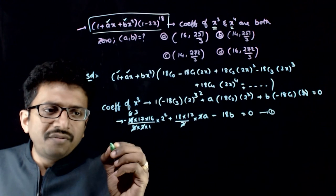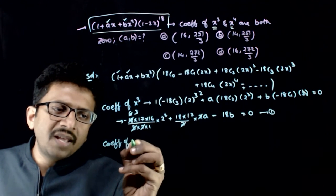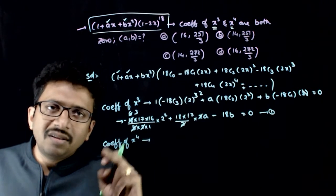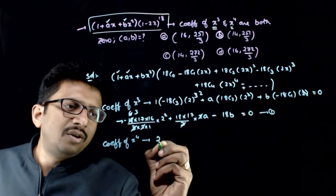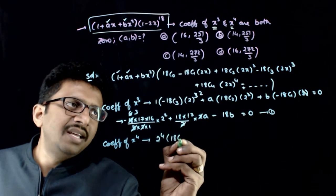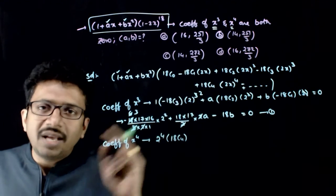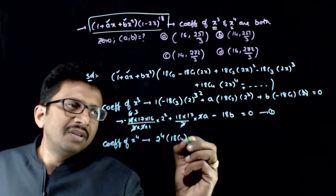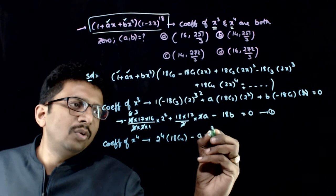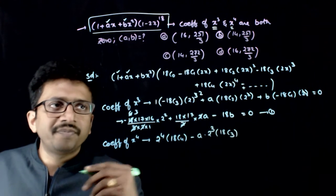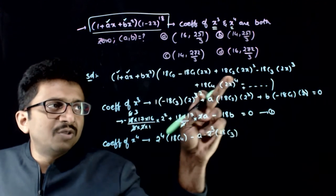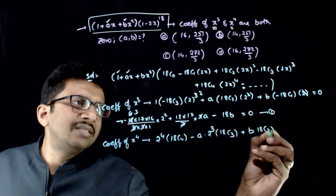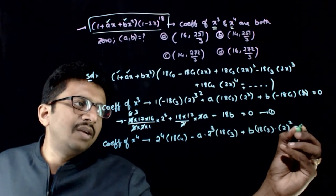Similarly, for the coefficient of x⁴: 1 multiplied by the x⁴ term gives 2⁴·18C4; the ax term multiplied by the x³ term gives minus a·8·18C3; and the bx² term multiplied by the x² term gives b·18C2·2² = 0.